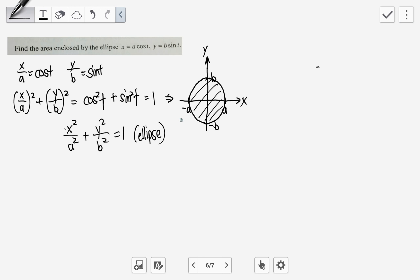We are asked to find the area enclosed by the ellipse x equals a cosine t, y equals b sine t. In fact, this diagram is not given. You are only given this. So how do you draw the diagram?